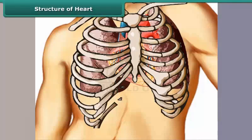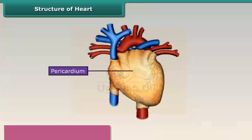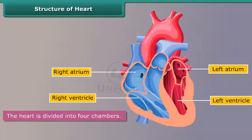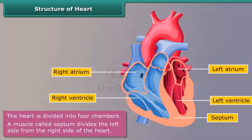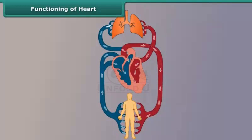The heart is a muscular organ located slightly to the left of the middle in the chest cavity. It is the size of a human fist and is responsible for pumping blood to different parts of the body. It is enclosed in a protective sac called the pericardium. The heart is divided into four chambers: the left atrium and right atrium at the top, and the left ventricle and right ventricle at the bottom. The muscle called the septum divides the left side from the right side. The right side pumps deoxygenated blood to the lungs for purification, while the left side pumps oxygenated blood from the lungs to the rest of the body.